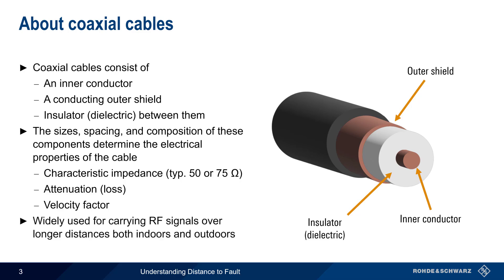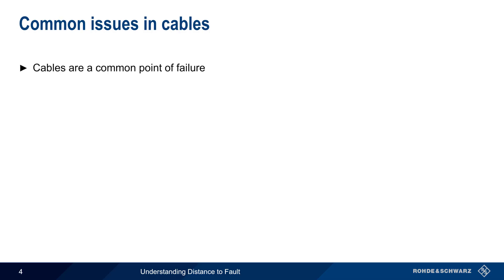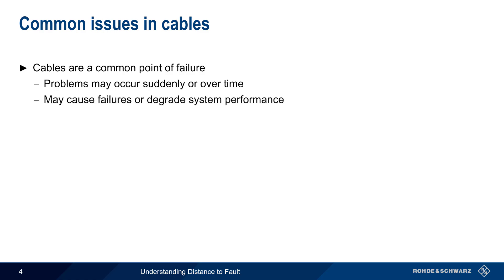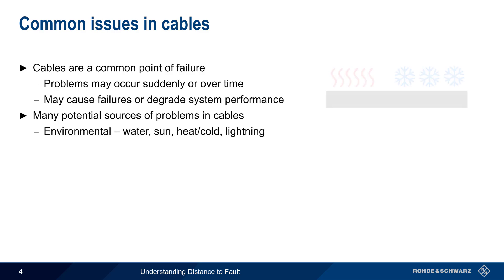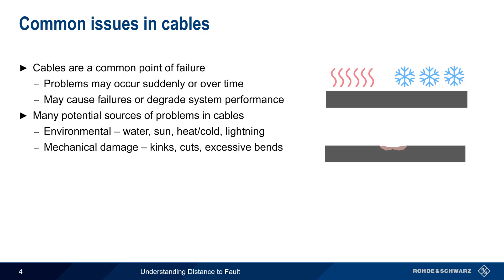When radiofrequency signals are conducted over long distances, both indoors and outdoors, this is most often done using coaxial cables. These cables are, however, a common point of failure within radiofrequency systems. Problems may occur suddenly or gradually over time, and the severity can range from complete system failure to various levels of performance degradation. In a non-laboratory environment, problems may be caused by environmental factors such as water, temperature changes, lightning, or mechanical damage such as kinks, cuts, or excessive bends.